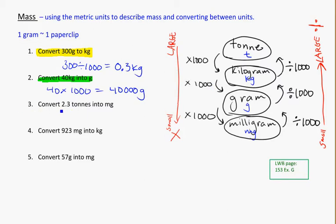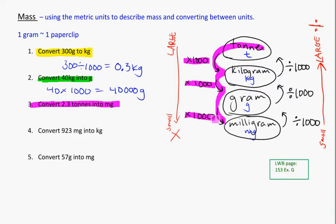Converting 2.3 tons into milligrams — this is a long way around. To convert 2.3 tons into milligrams, I need to go from tons to kilograms, to grams, to milligrams. Every time I take one of those steps, I multiply by 1,000. So it's going to be 2.3 times 1,000, times 1,000, times 1,000. That's because there are 1,000 kg in 1 ton, 1,000 grams in 1 kg, and 1,000 milligrams in 1 gram. So we'll end up with a really large number — your calculator might give you something funny.